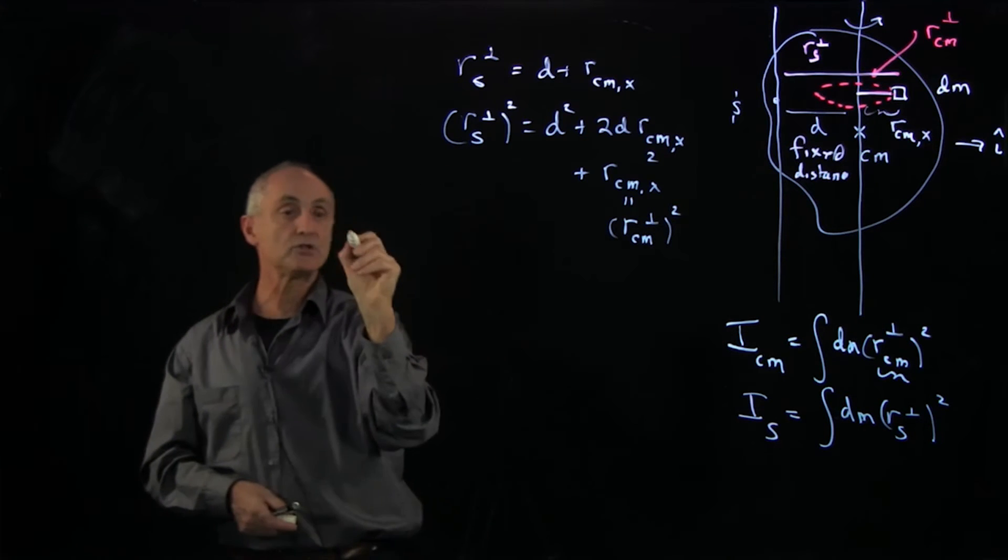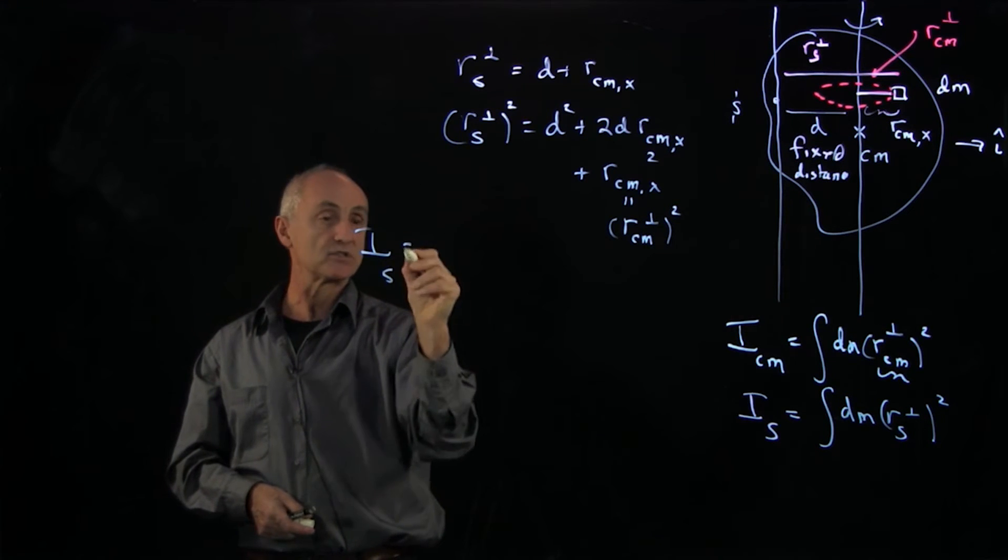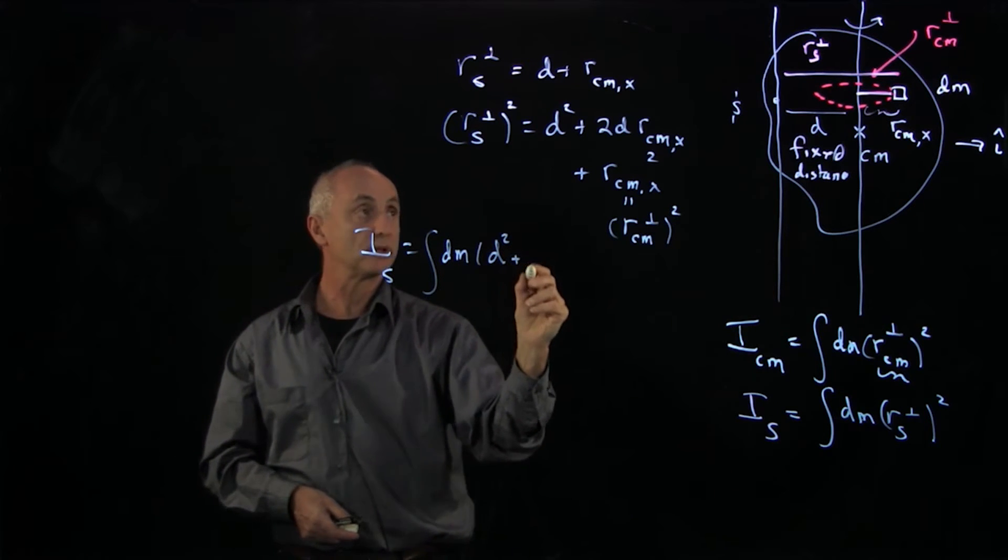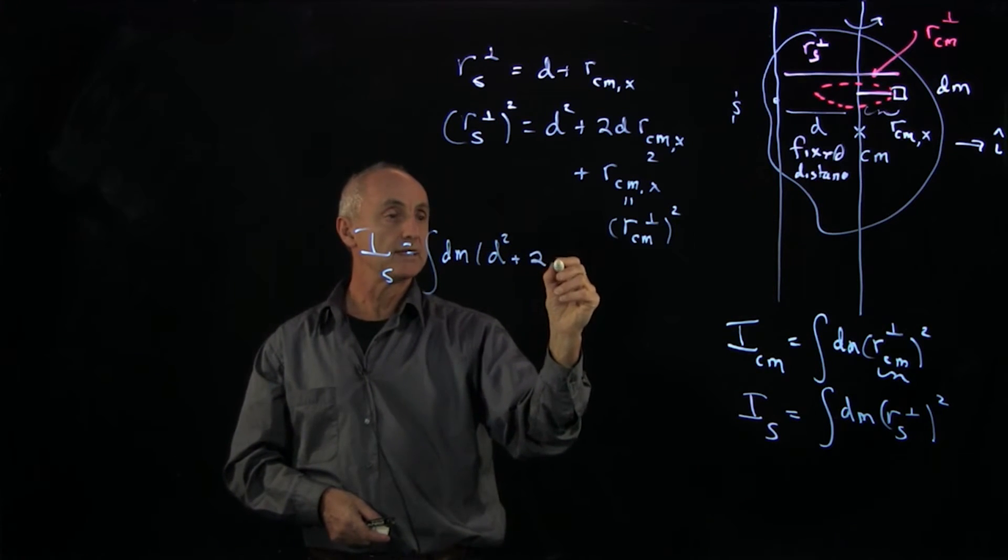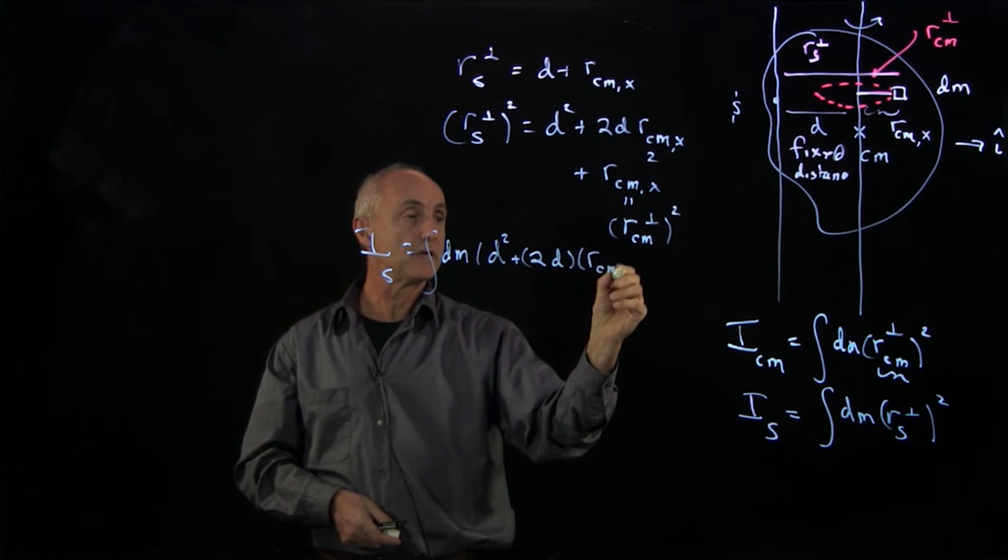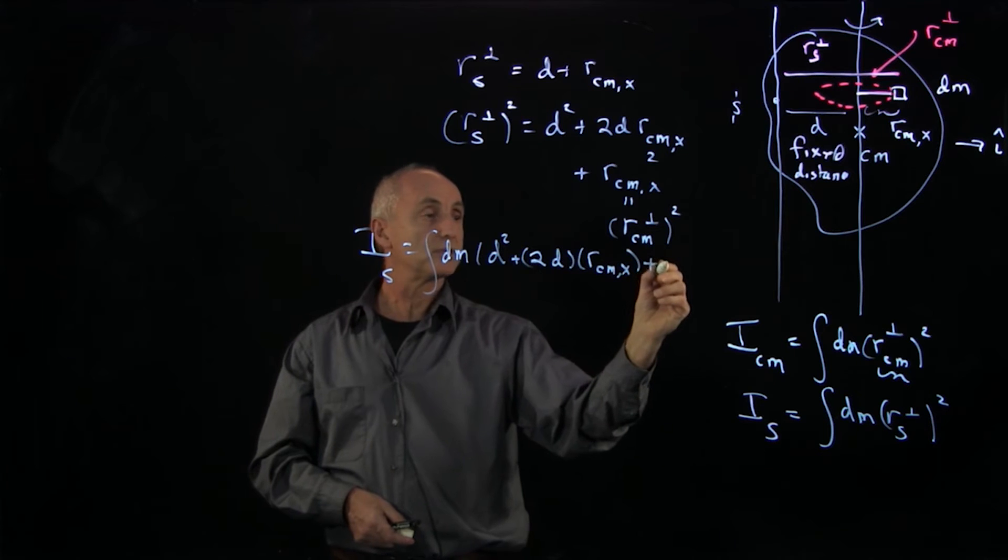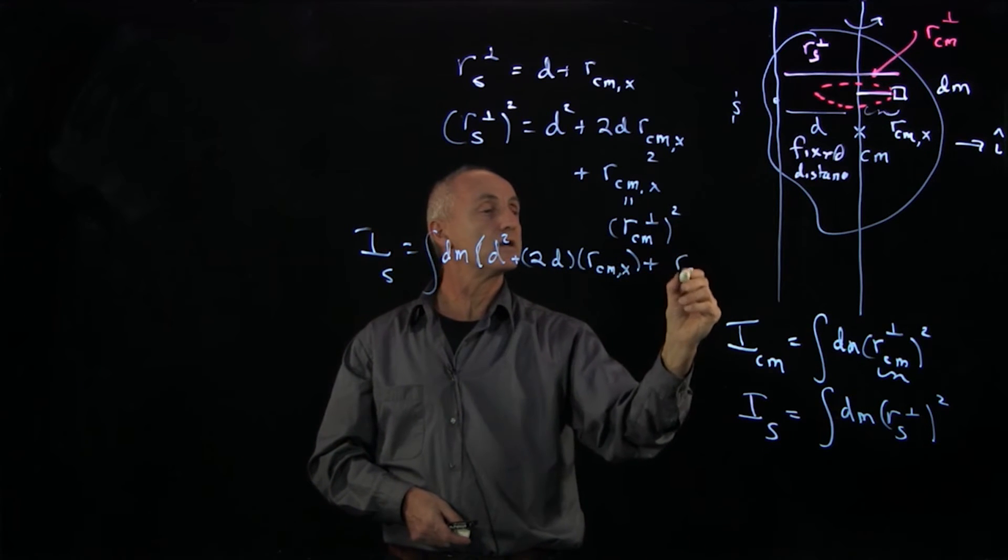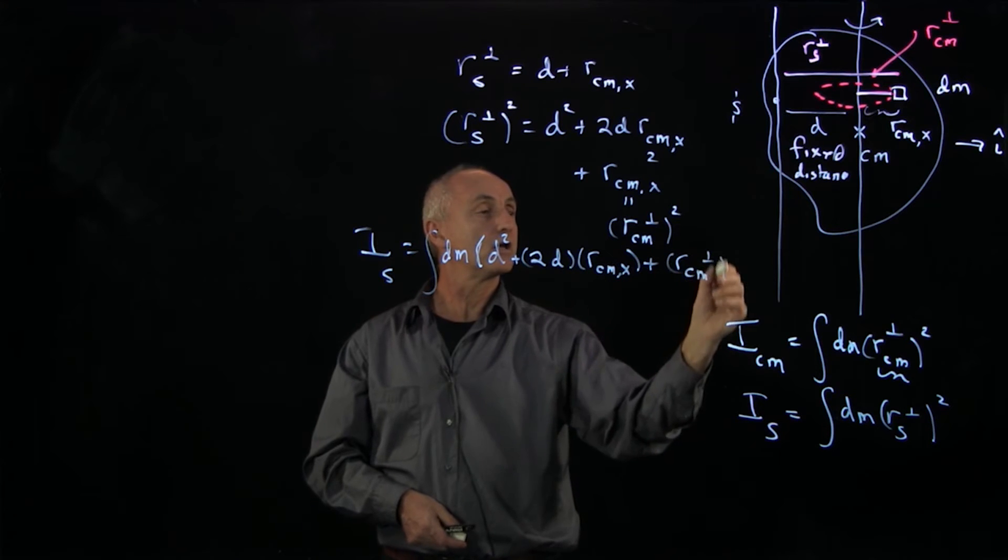So when I put this into my moment of inertia, I get dm times d squared plus 2d times r_cm_x plus, this parentheses, r_cm_perp squared.